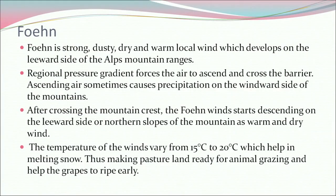Foehn is a strong, dusty, dry and warm local wind which develops on the leeward side of the Alps mountain ranges. Regional pressure gradient forces the air to ascend and cross the barrier. Ascending air sometimes causes precipitation on the windward side of the mountains. After crossing the mountain crest, the Foehn winds start descending on the leeward side or northern slopes as warm and dry wind. The temperature of the winds varies from 15 to 20 degrees centigrade, which helps in melting snow, making pasture land ready for animal grazing and helping grapes to ripen early.